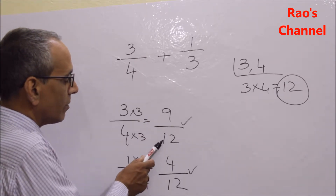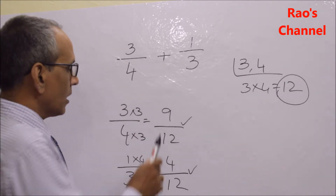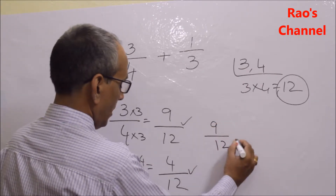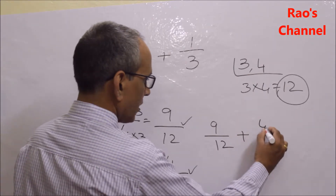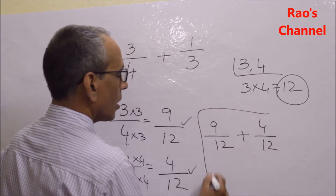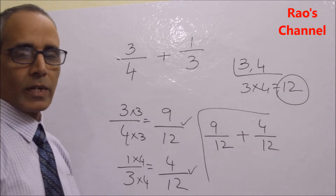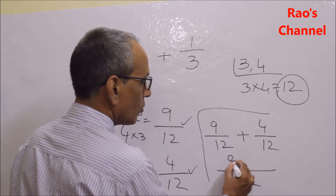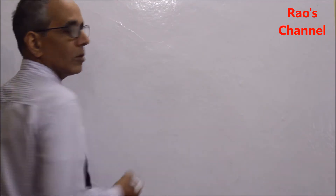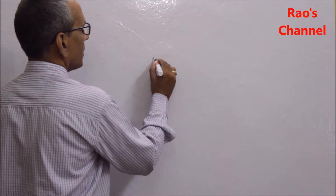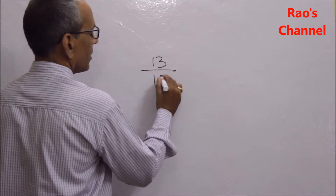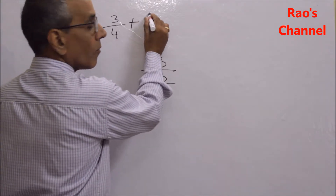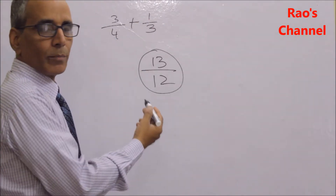Now they are like fractions because they share the common denominator 12. I add them: 9 by 12 and 4 by 12. Since they are like fractions, I take the common denominator and add the numerators — that is 9 plus 4, giving 13 by 12.